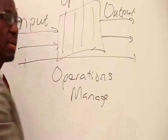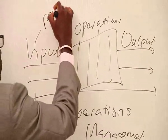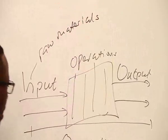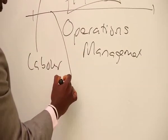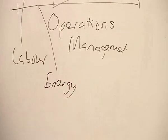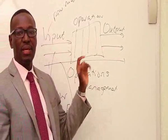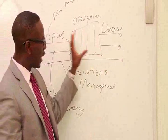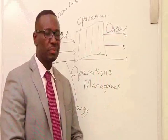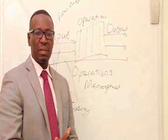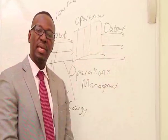Now, what are examples of inputs? In a manufacturing firm, you could say raw materials, labor, and other resources such as energy. For example, let's say we're making steel. We require raw materials to go into the manufacturing process. There's going to be a lot of transformation that goes on there, and those raw materials will be converted into steel that we can use — reinforced steel for construction, or different types of steel to make furniture, and so on. That's an example of an operations process in manufacturing.